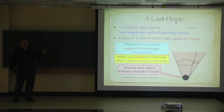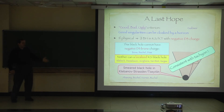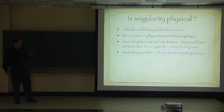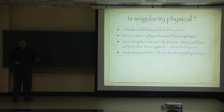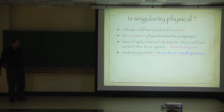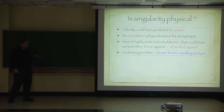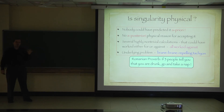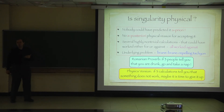At this point: the singularity cannot be resolved by brane polarization, and it cannot be cloaked by a black hole horizon. Nobody could have predicted this a priori — everybody was amazed. There's no posterior physical reason for accepting the singularity. All calculations gave us a negative result. And we now understand the underlying problem: the branes hate each other. There's a brane-brane repelling tachyon on the worldvolume. That's why this system is not metastable — it's actually tachyonic. There's an old Romanian proverb that if people tell you you're drunk, you should take a nap. The physical version: if you do three calculations and they all say something doesn't work, it's time to give it up.